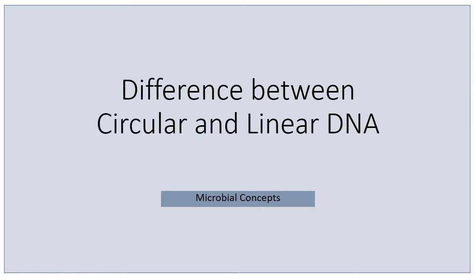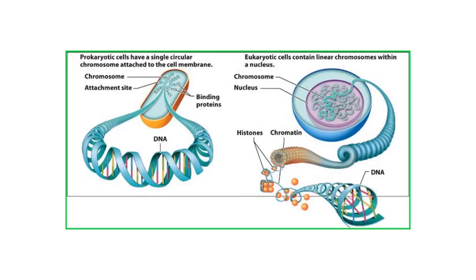As you can see in this image, prokaryotic cells have a single circular chromosome which is attached to the cell membrane. Prokaryotes have circular chromosomes, whereas eukaryotes contain linear chromosomes within the nucleus.